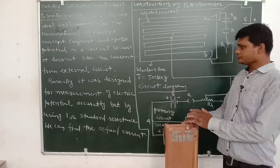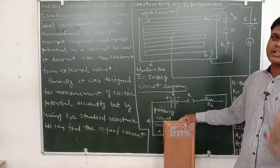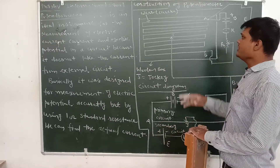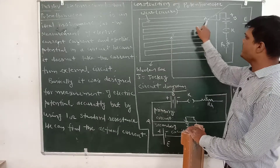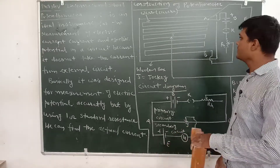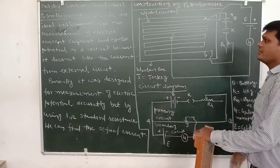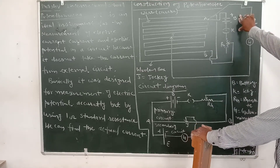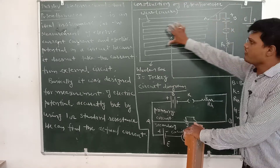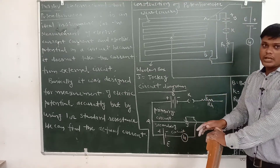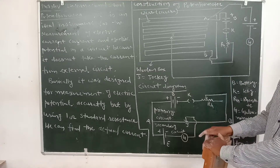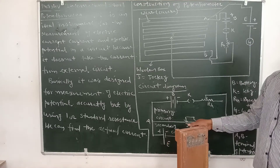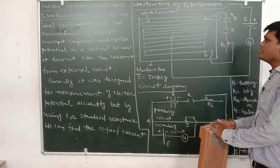Generally in a potentiometer we make two circuits: first is the primary circuit and second is the secondary circuit. Each wire has a length of one meter, and we have placed ten such wires. When connected to a battery with an EMF of two volts, the voltage gets divided over these wires. To measure the potential at each point, we use the length — this is called the potential gradient. The potential gradient x is equal to V upon l.